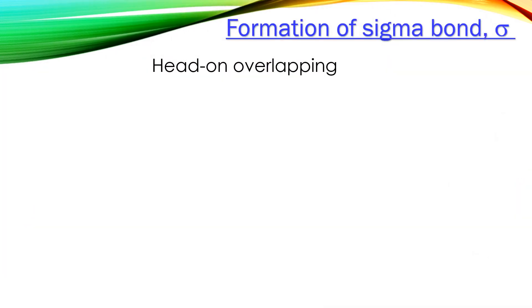Sigma bonds result from the head-on overlapping of two atomic orbitals. This type of overlap places the bonding electrons in a molecular orbital along the line between the two bonded atoms.